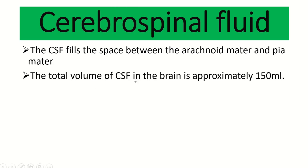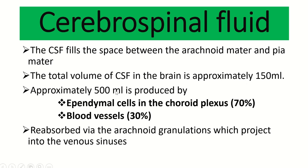The total volume of CSF in the brain is approximately 150 mL — this information is very important for MRCS exam. Approximately 50 mL is produced by the ependymal cells of the ventricles and also from blood vessels, but the majority — about 70% — is produced by the choroid plexus of the ependymal cells.